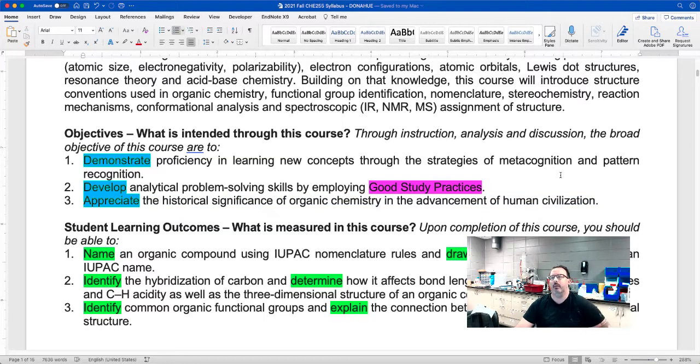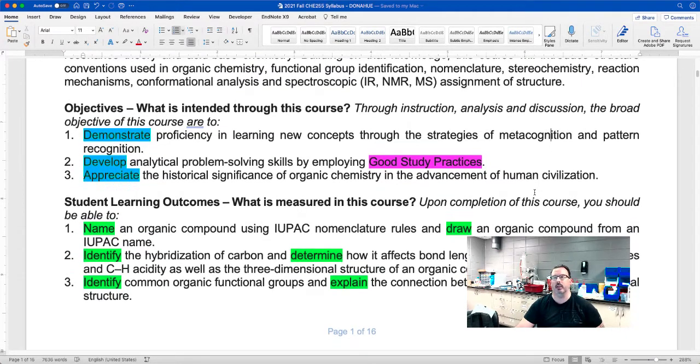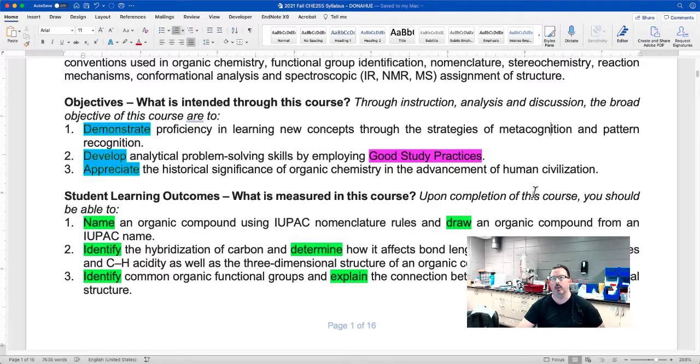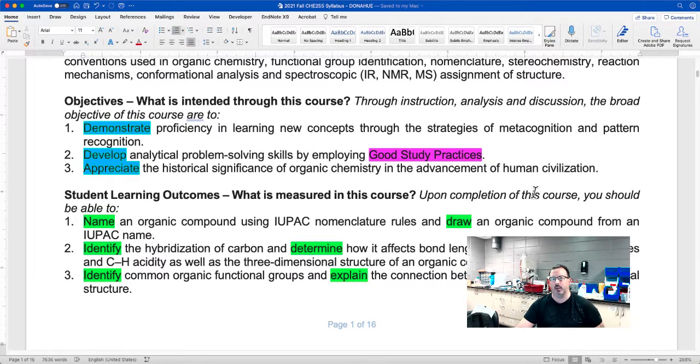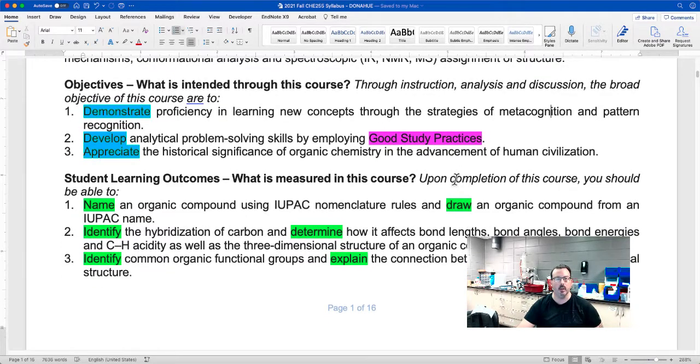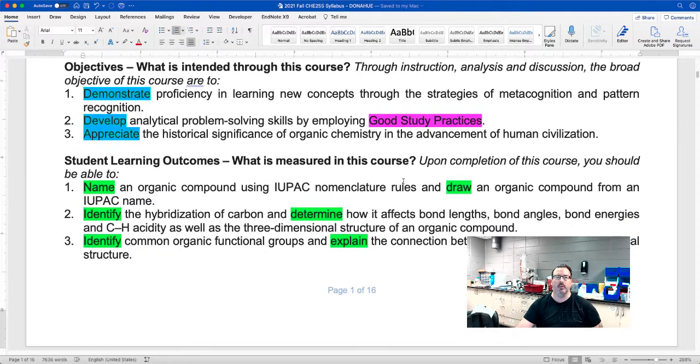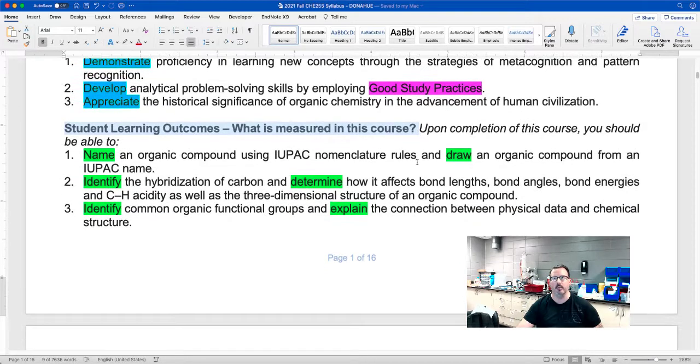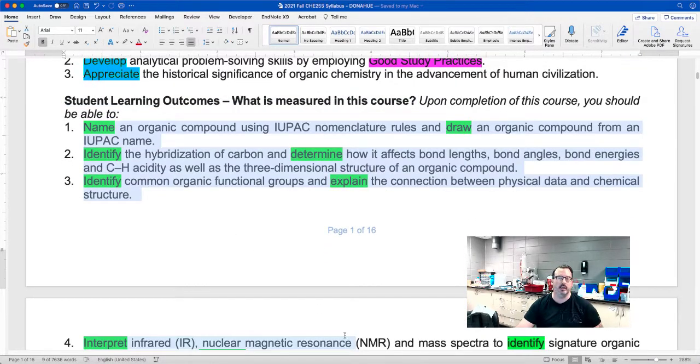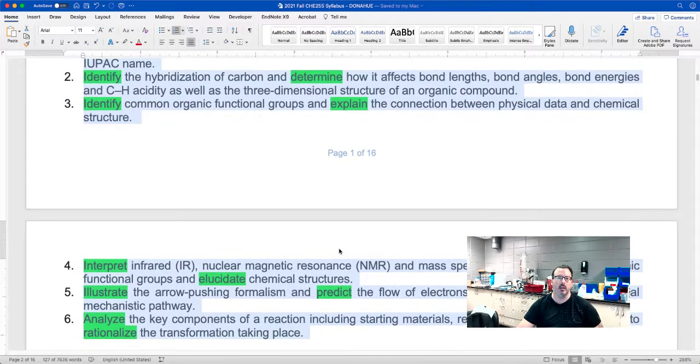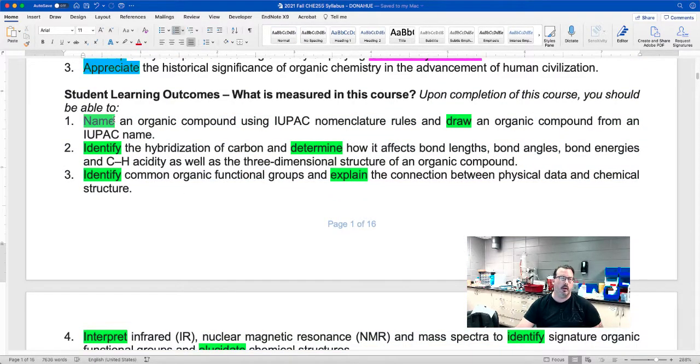So as I stated, you know, if you're asking yourself why are you sitting in this course, that's obviously a valid question. There are a lot of skills you can develop in this course that will relate to other courses in your learning development. So what's particularly relevant to you are these student learning outcomes. So what is measured in this course? How do you earn your grade? So I encourage you to read these six learning outcomes here. The verbs highlighted in green are the action verbs of things that you need to do to demonstrate you understand the material.